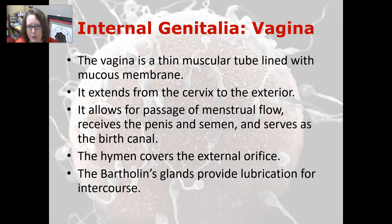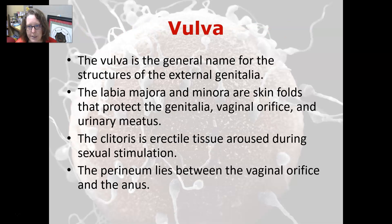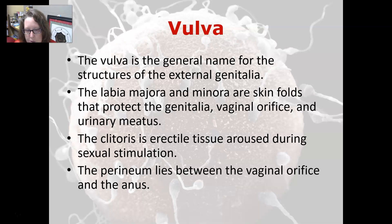The vagina is a thin muscular tube lined with mucous membrane. It extends from the cervix to the exterior and allows for the passage of menstrual flow, receives the penis and semen during intercourse, and serves as the birth canal. The hymen covers the external orifice, and Bartholin's glands provide lubrication for intercourse. The vulva is the general term for the structures of the external genitalia. The labia majora and minora are skin folds that protect the vaginal orifice and urinary meatus. The clitoris is erectile tissue aroused during sexual stimulation — it is the equivalent of the penis in the male. The perineum lies between the vaginal orifice and the anus.